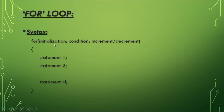The second part is the condition. The condition is given as a relational expression, the same as in other loops. The statement is executed only if the given condition is true. If the condition is false, the statement is never executed.